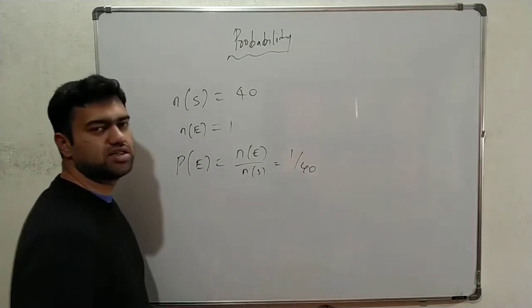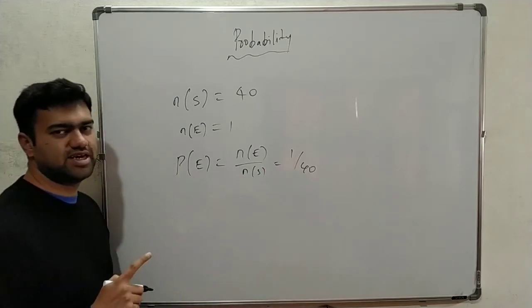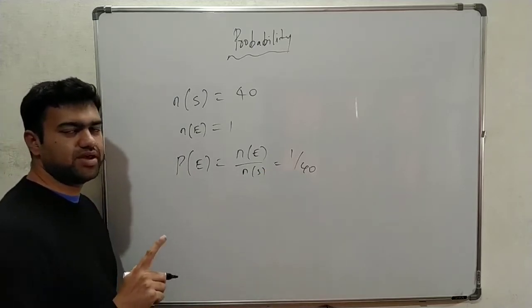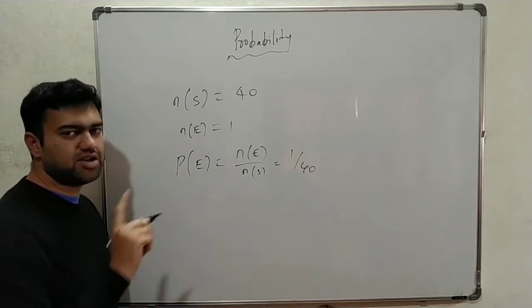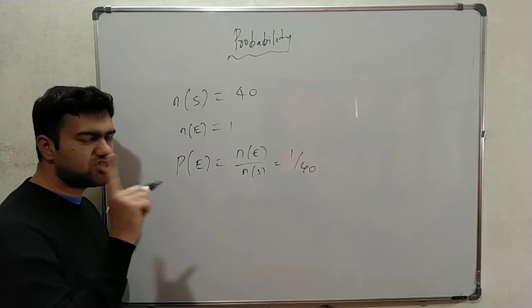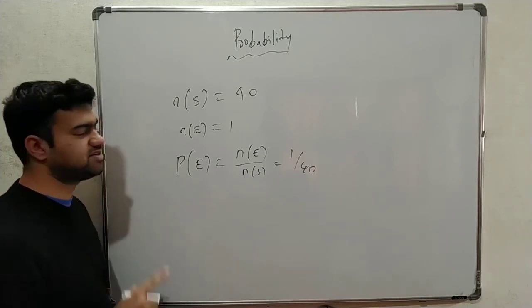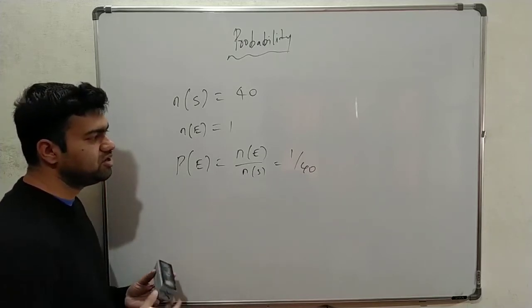If you are in the first rank, there will be 1 out of 40 chances. So if you are in the first rank, there will be 1 out of 40 chances, and we have to find this using the formula.